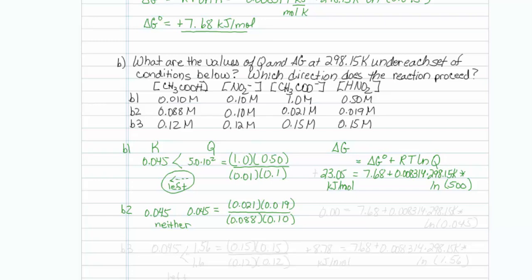Now, if we're at equilibrium, the free energy change should actually be zero, so let's just double check that. That should be equal to 7.68 plus 0.008314 times 298.15 kelvin times the natural log of 0.045. And when I put that all into my calculator, plus or minus a little bit of error, it looks like it is honestly a free energy of zero, which is what it should be at equilibrium.